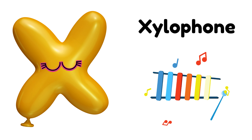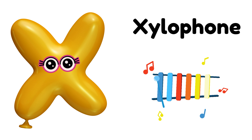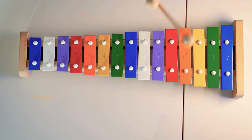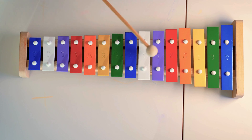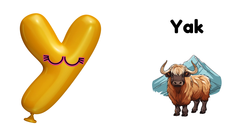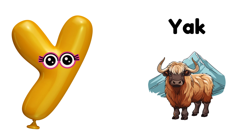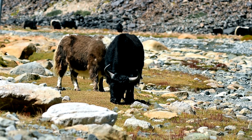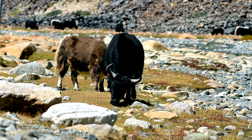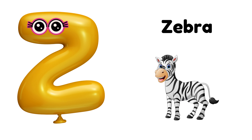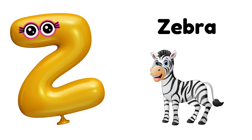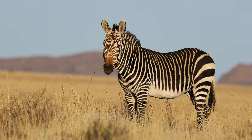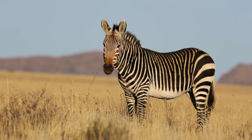X is for Xylophone, X-X-Xylophone, X-X-Xylophone, X-Xylophone. Y is for Yak, Y-Y-Yak, Y-Y-Yak, Y-Yak. Z is for Zebra, Z-Z-Zebra, Z-Z-Zebra, Z-Z-Zebra.